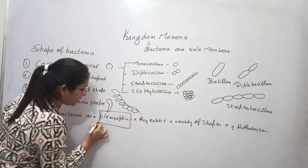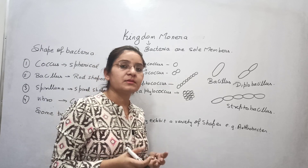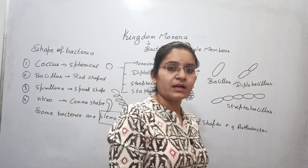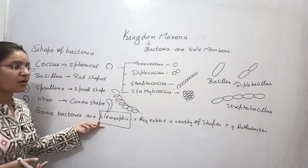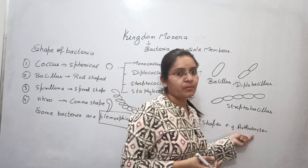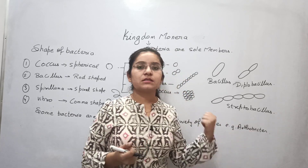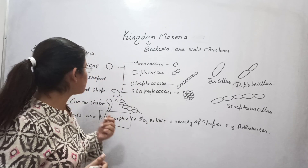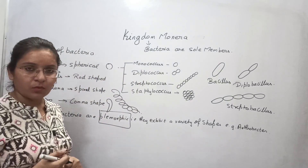The most common example of a vibrio-shaped bacterium is Vibrio cholerae, which causes the disease cholera. Some bacteria are also called pleomorphic — pleomorphic means bacteria that can exist in more than one shape; they may exist as coccus as well as bacillus. Such bacteria are called pleomorphic bacteria, for example Arthrobacter. These are the different shapes of bacteria: coccus, bacillus, spirillum, and vibrio.